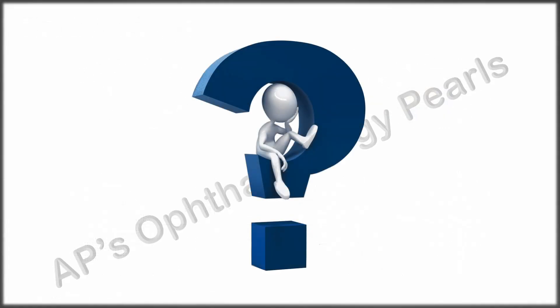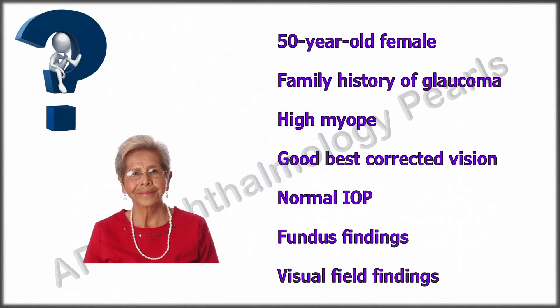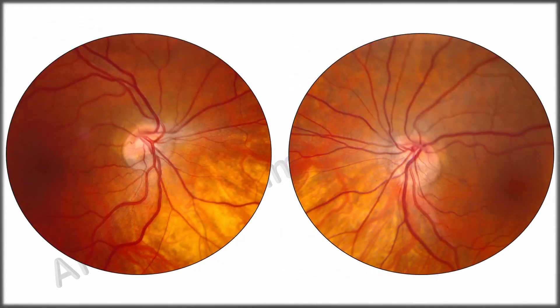So what are we dealing with here, and what needs to be done? We have a 50-year-old female with a family history of glaucoma who came in for a routine checkup. She is a high myope with good corrected vision, normal intraocular pressure, and with fundus and field changes.